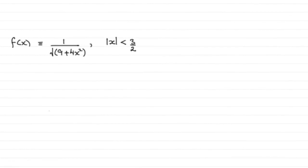Now in this question we're asked to expand f(x) using the binomial expansion and write down the first three nonzero terms for f(x) where f(x) is 1 over the root of 9 plus 4x squared, and this is only valid if x lies between minus 3/2 and 3/2.